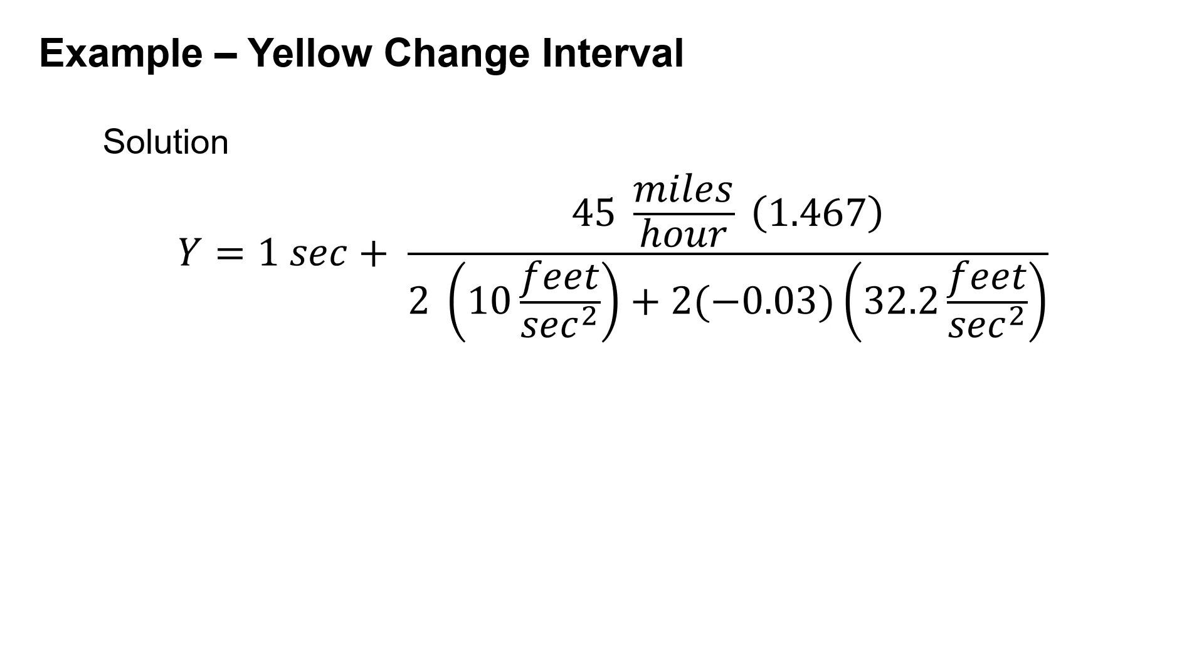In our denominator: two times our deceleration of 10 feet per second squared plus two times negative 0.03 times 32.2 feet per second squared.